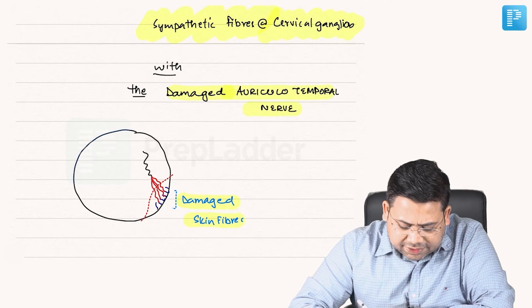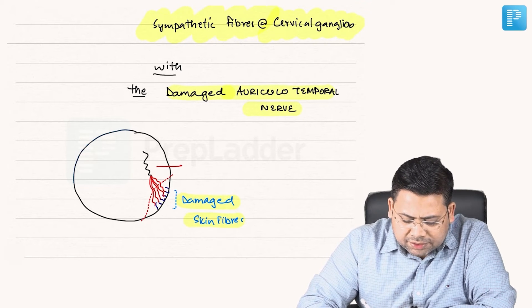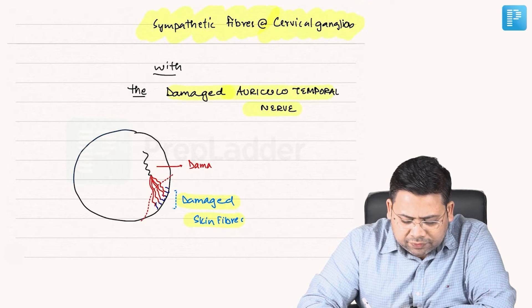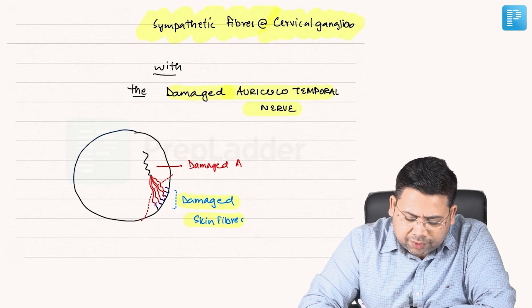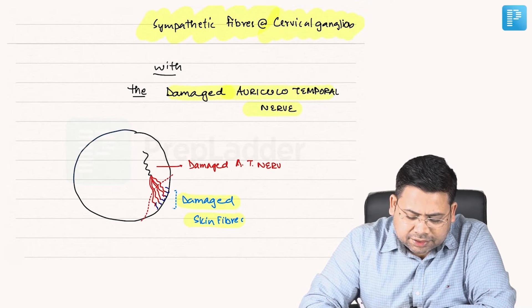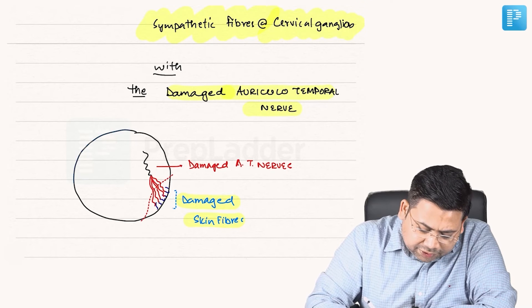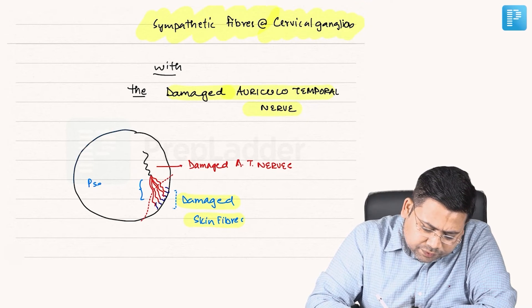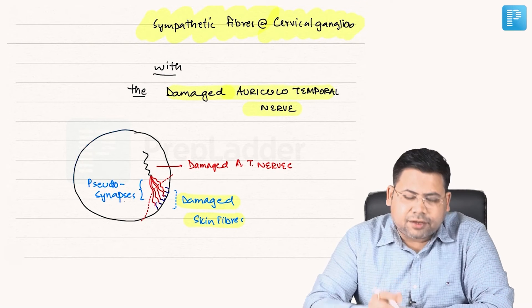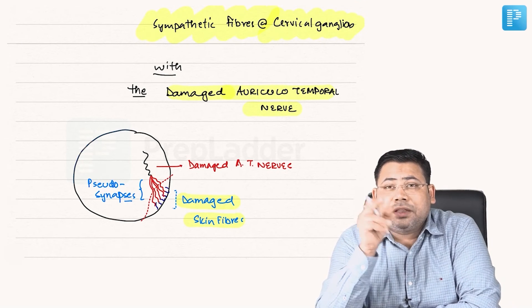So what is Frey's syndrome? This is the damaged auriculotemporal nerve, these are the damaged skin fibres, and what we see forming in between is a pseudosynapse — pseudosynapses developing between the skin fibres and the auriculotemporal nerve.